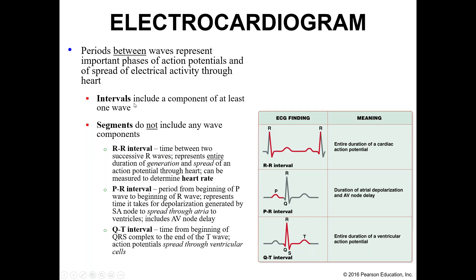The intervals include the R-to-R interval, the P-to-R interval, and the Q-to-T interval. The R-to-R interval is the time between two successive R waves, representing an entire generation and spread of an action potential through the heart — both atria and ventricles. We can use this to measure heart rate by counting R-to-R intervals over a specific length of time and calculating beats per minute.